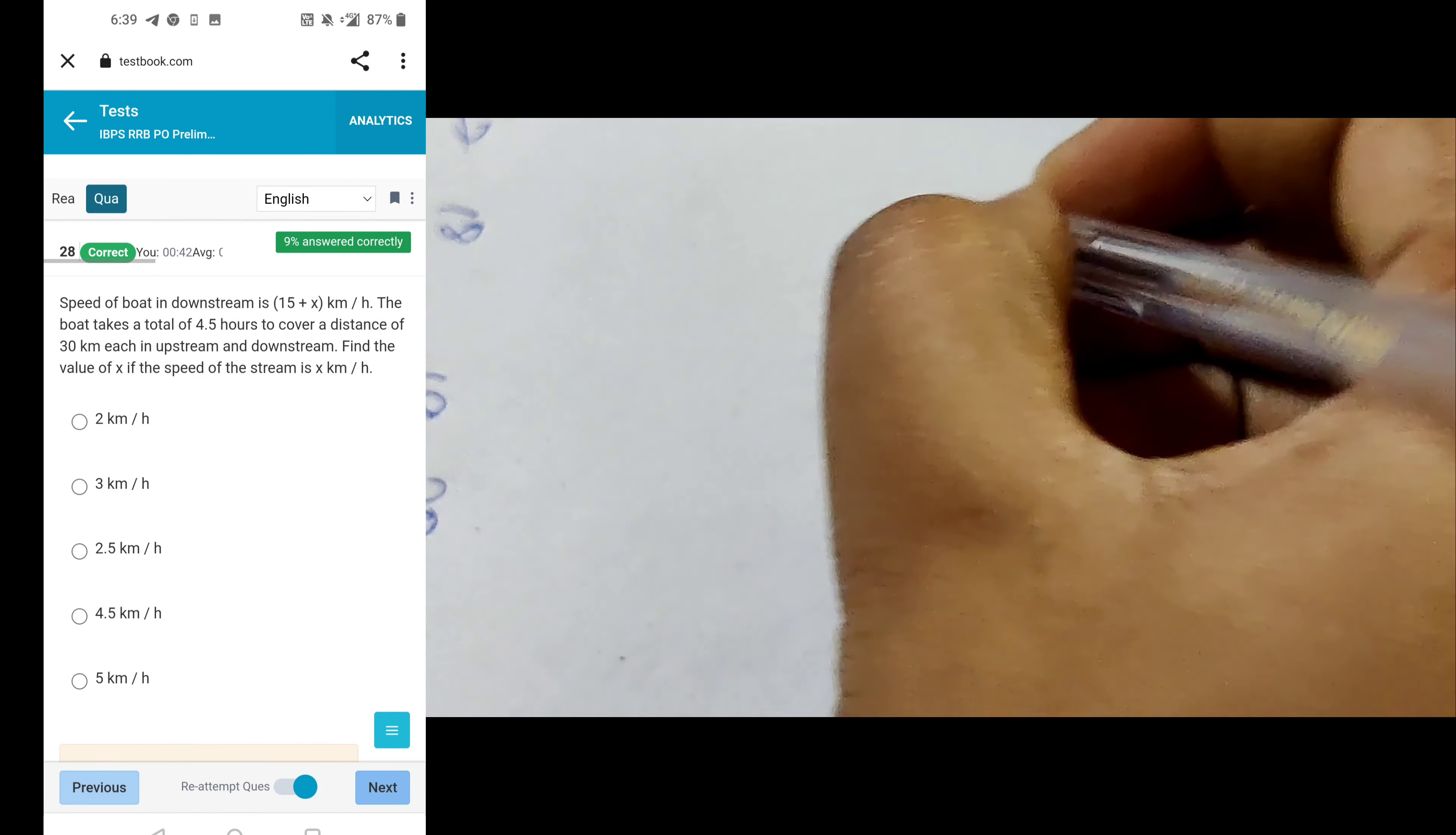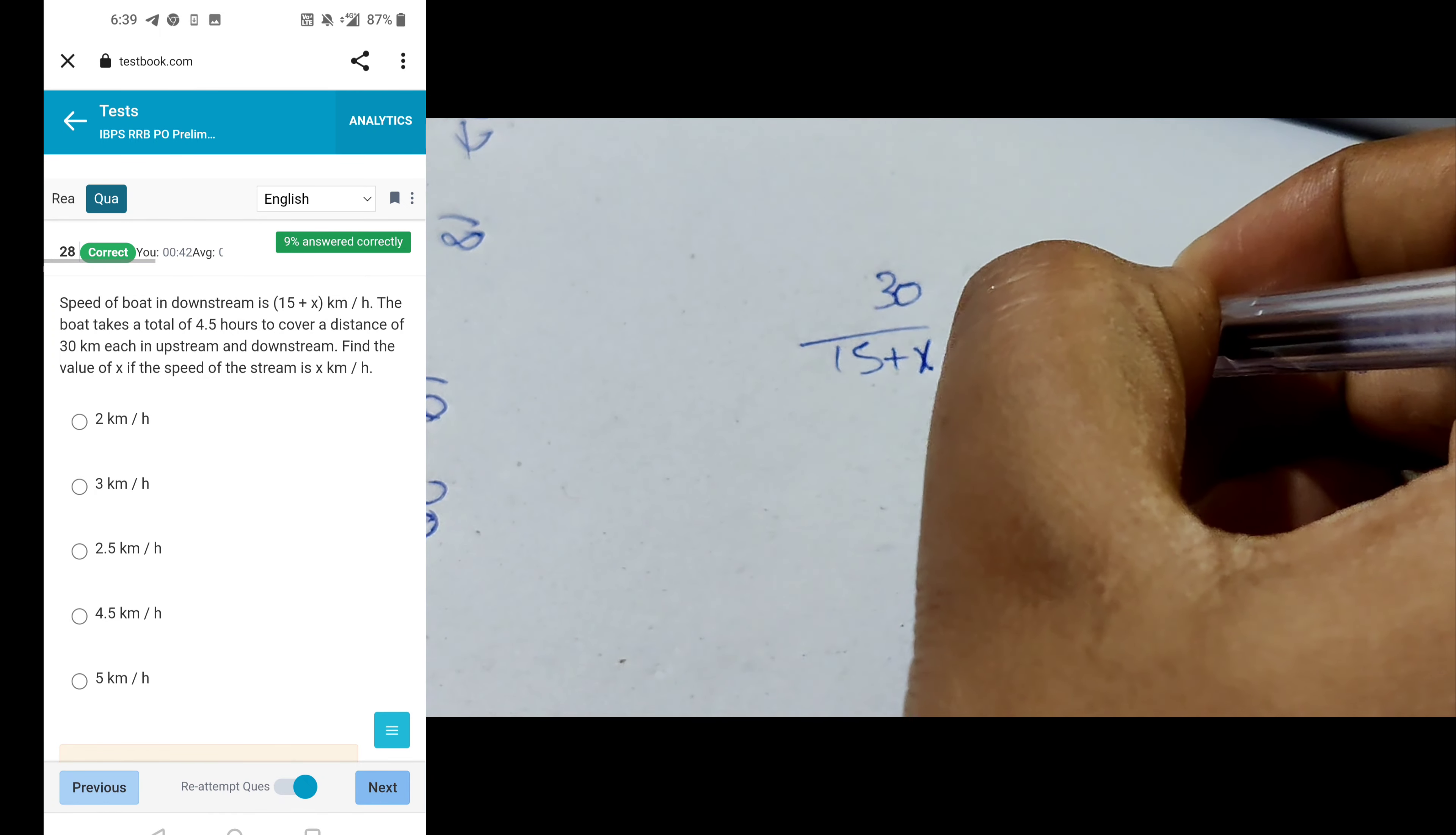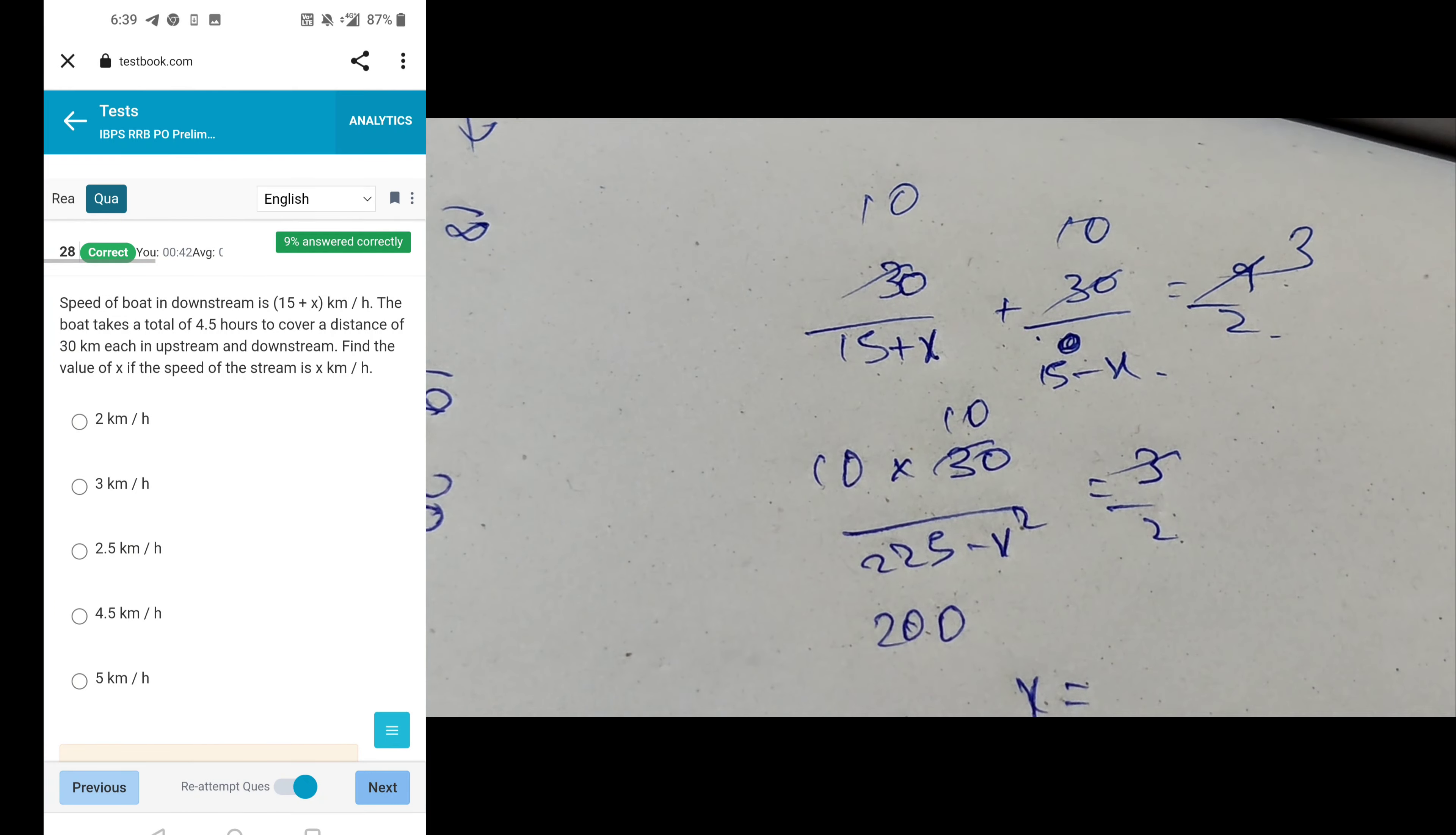Next question, speed of the boat is 15 plus x. Both take same distance 15 plus x. Upstream is 9 minutes. Speed of the stream is minus x, 10 by 30. You can get 2 minus x equals 5.